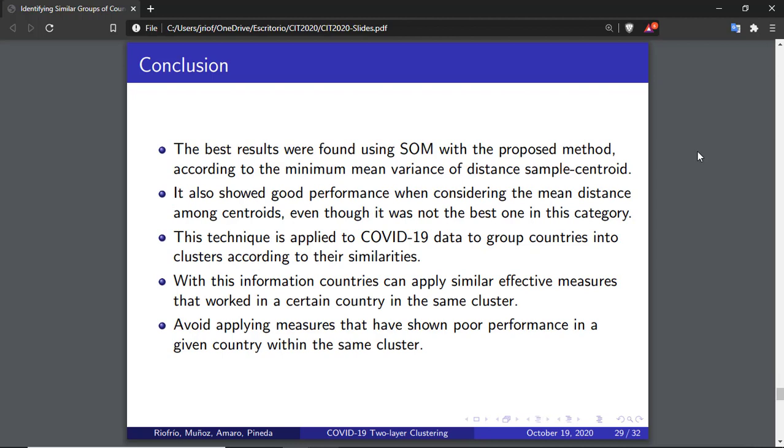According to the minimum mean variance of distance sample centroid, the best results were found using self-organizing map with the proposed method of two-layer clustering. It also showed a good performance when considering the mean distance among centroids, even though it was not the best one in this category. This method showed a reduced amount of plotted points in the graph as it groups the countries based on the first clustering similarities. This technique is applied to COVID-19 data collected from 163 countries to group countries into clusters according to their similarities. With this information, countries can apply similar effective measures that work in a particular country in the same cluster or, on the contrary, avoid applying measures that have shown poor performance in a given country within the same cluster.